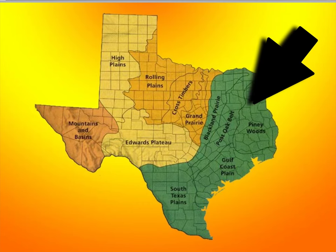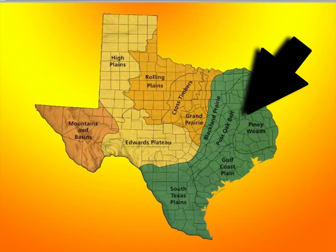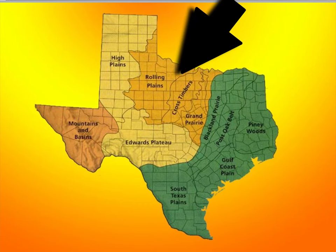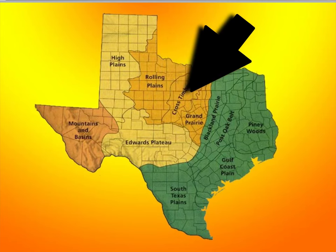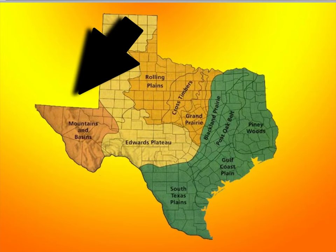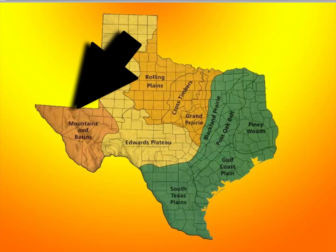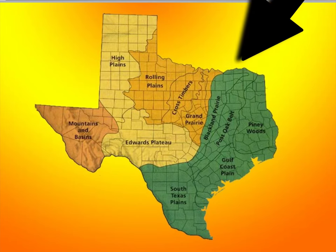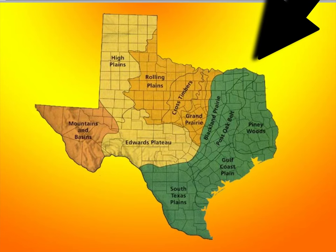So there you have it: the Gulf Coastal Plains, the Central Plains sandwiched in between, the High Plains, and last on the western border of Texas, the Mountains and Basin region. All four make up this great state of Texas, but they're all very diverse and unique.